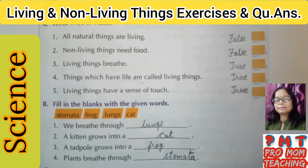Next, filling the blanks with the given words. First: we breathe through lungs. Second: a kitten grows into a cat. Third: a tadpole grows into a frog. A tadpole looks like a very small fish and breathes through gills like fishes. When a tadpole grows into a frog, it breathes through lungs on land and through skin in water. Fourth: plants breathe through stomata — the small pores present on their leaves.